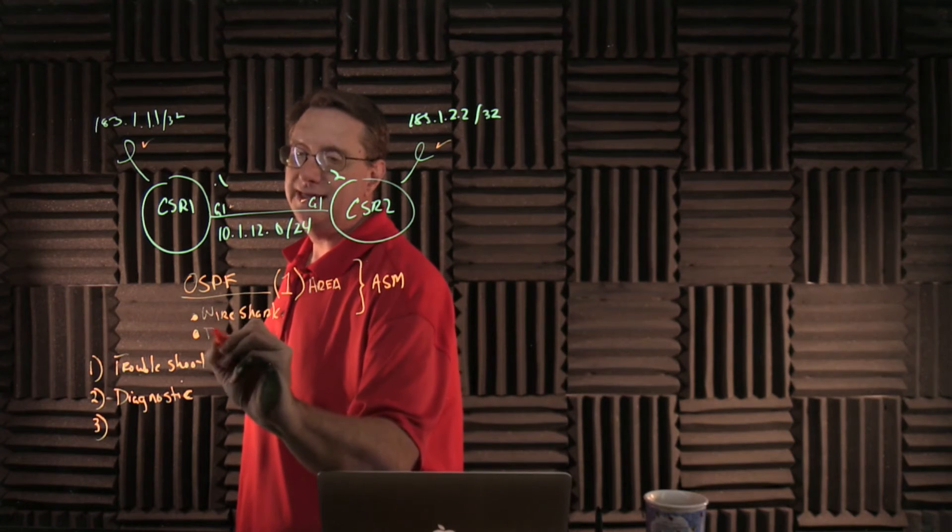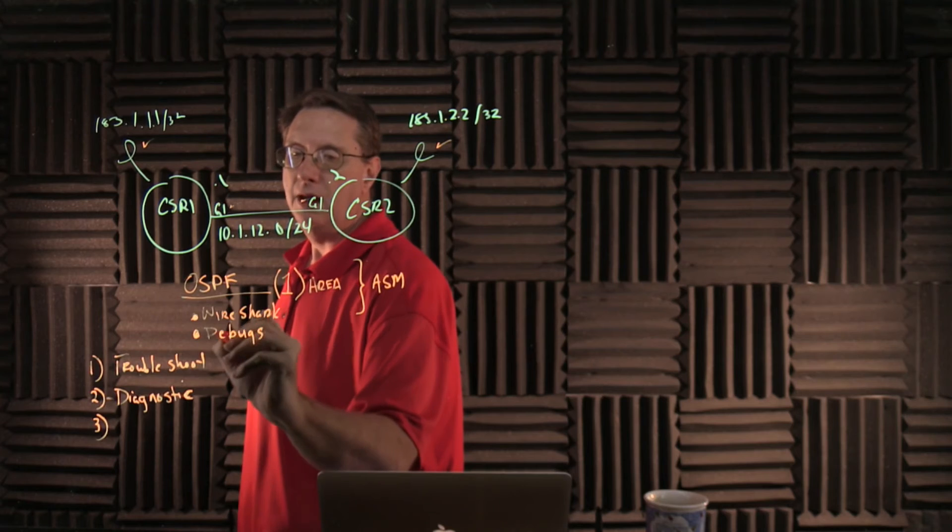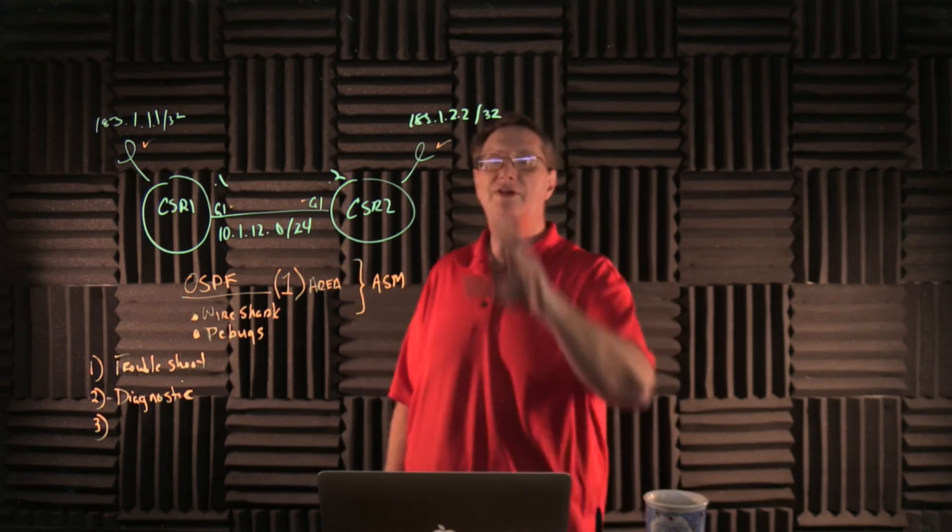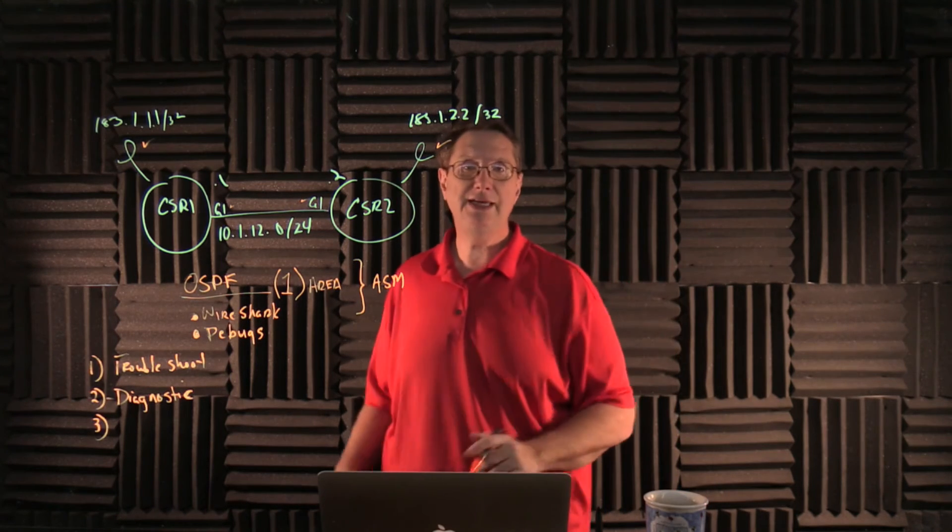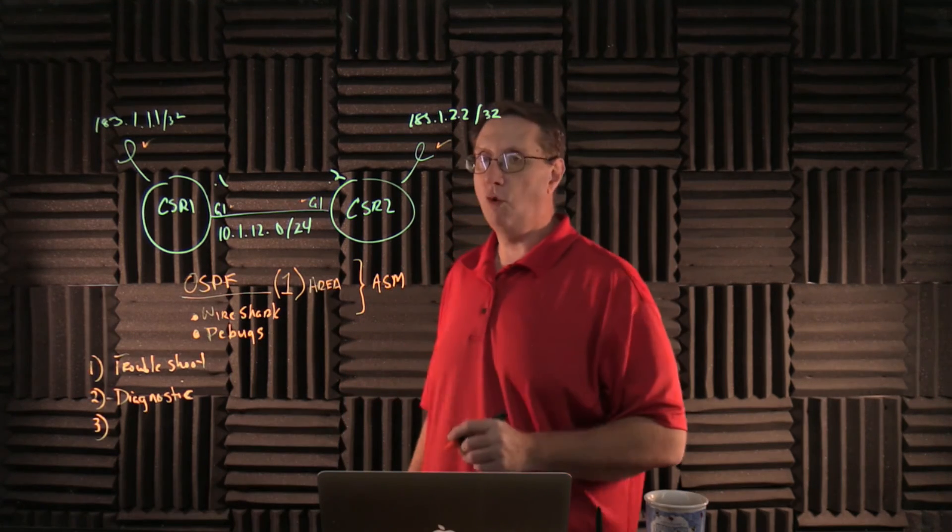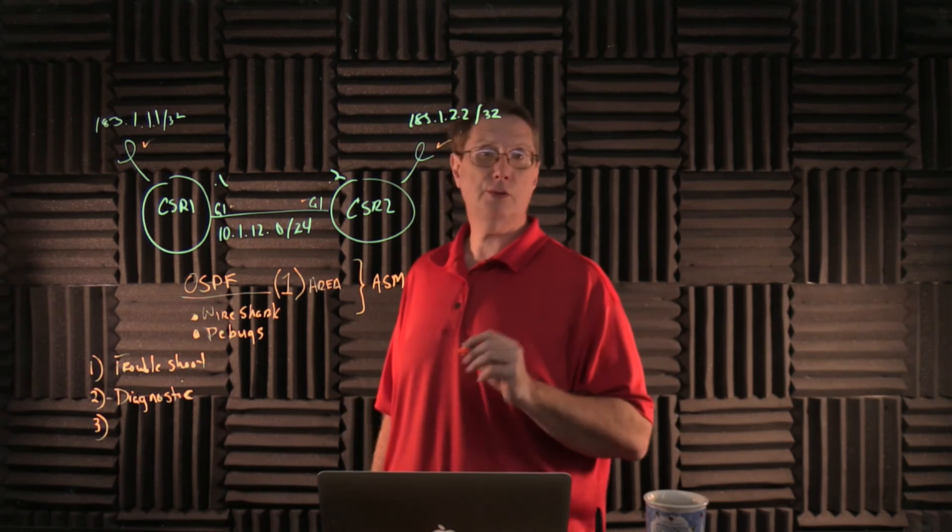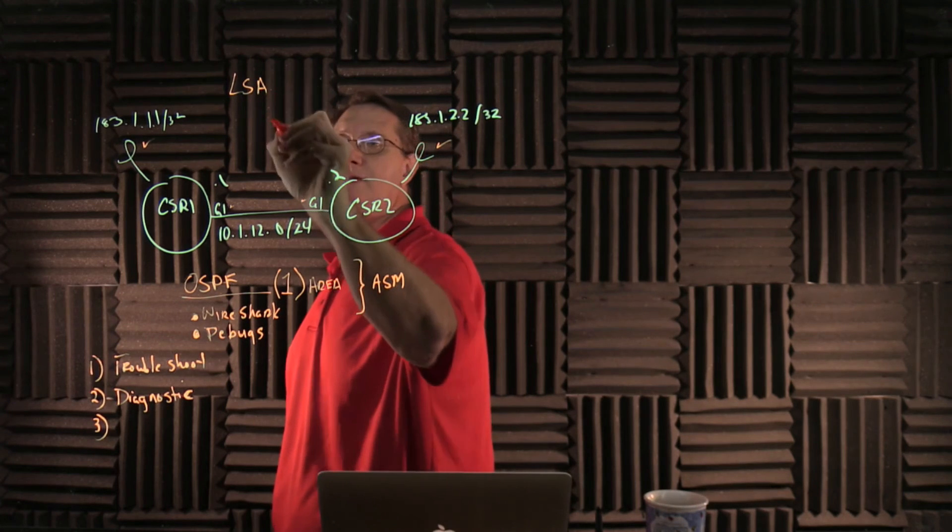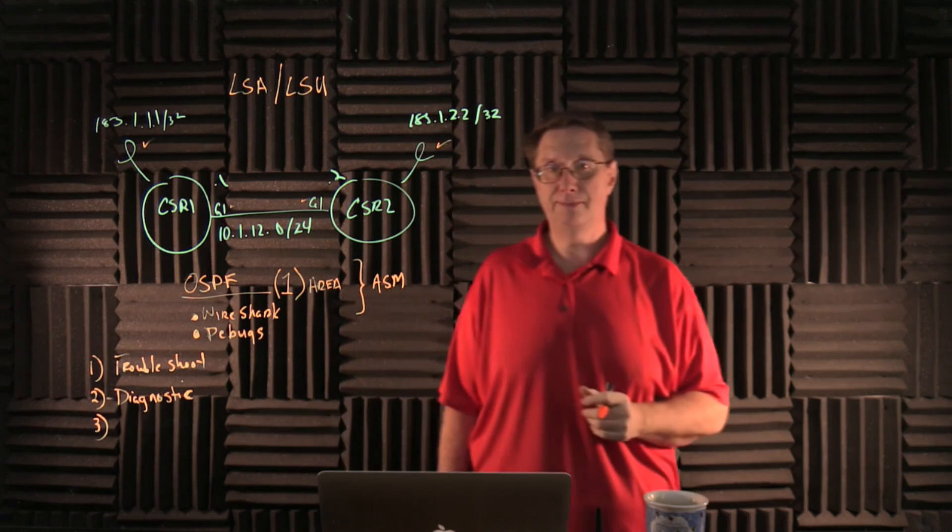So we're going to be looking at debugs and Wireshark traces, and we're going to walk through this entire process from beginning to end when it comes to forming a neighbor relationship. Then ultimately we're going to take a critical look at the link state advertisements as well as the link state updates that are used to exchange them.